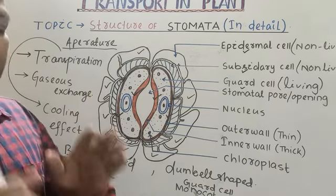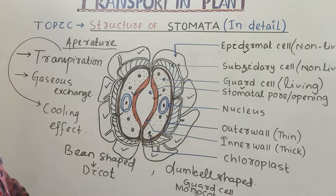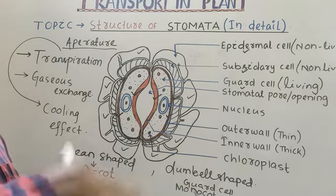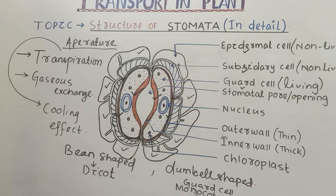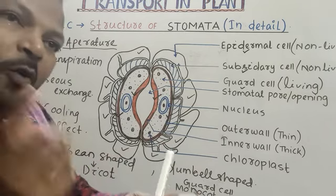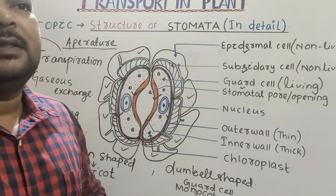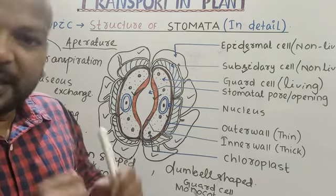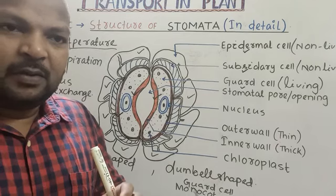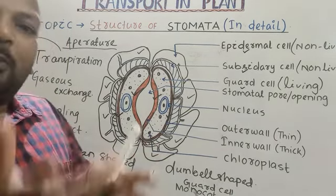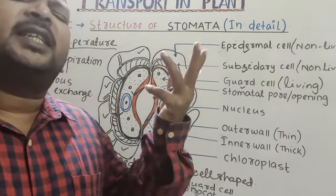With the help of stomata, transpiration can occur. Stomata in different plants work in different manners. Some plants open their stomata during daytime in general — transpiration usually occurs during the daytime when stomata are open. But there are huge exceptions.